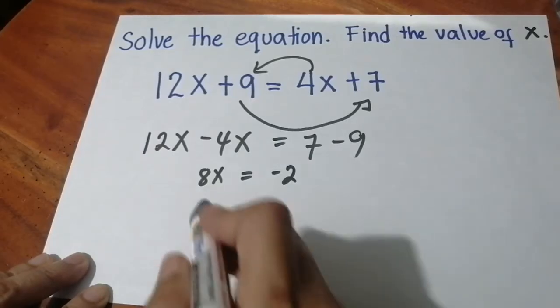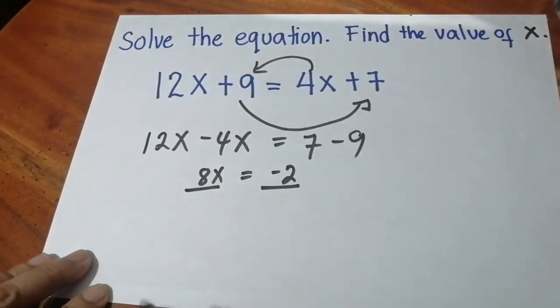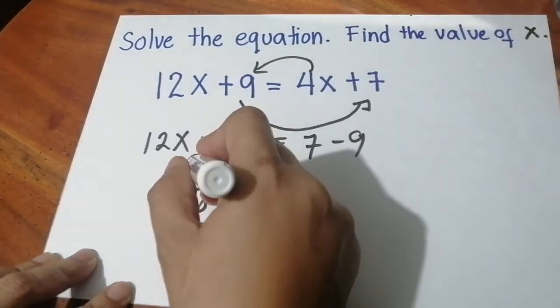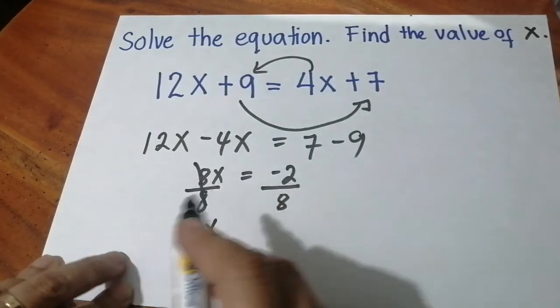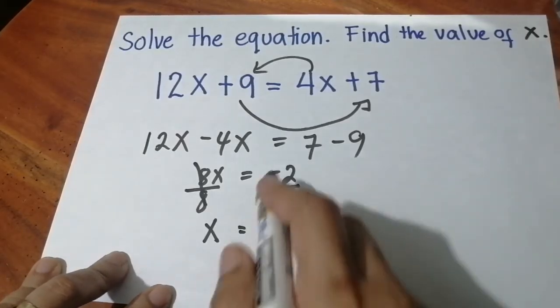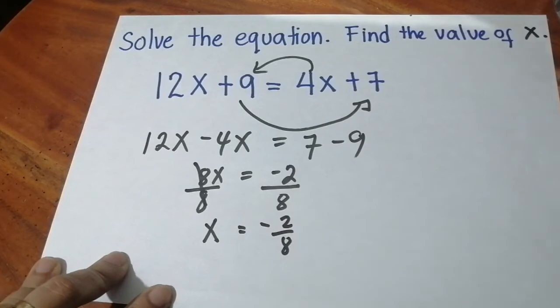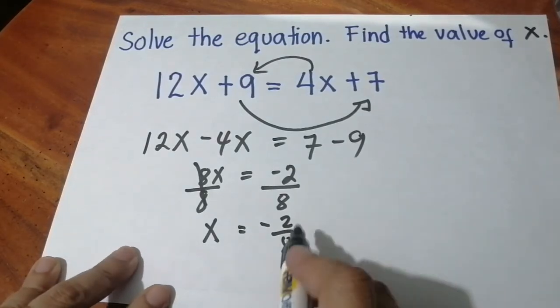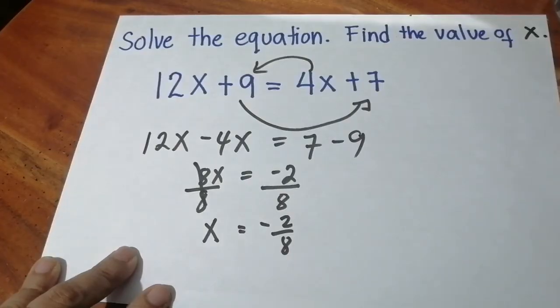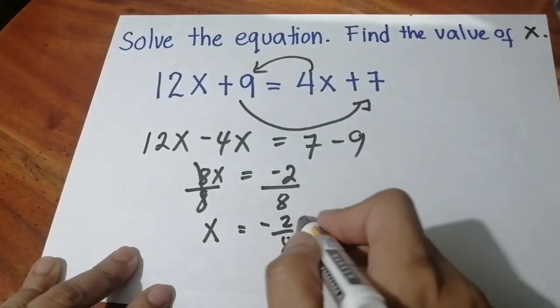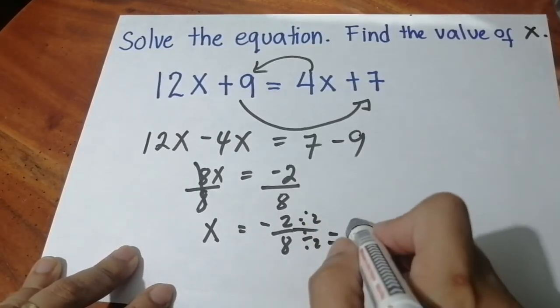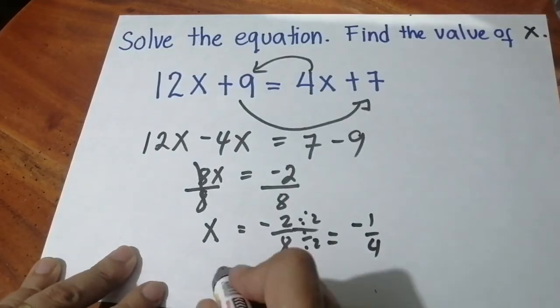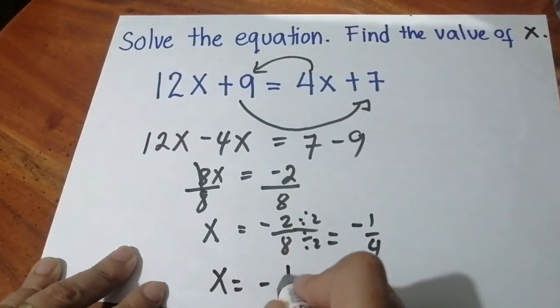To solve for the value of x, we have to divide both sides by 8 so that the 8 here will be eliminated and x should be alone. The answer will be negative 2 over 8, but that's not simplified. We simplify by dividing by 2. The final answer will be negative 1/4. The value of x is negative 1/4.